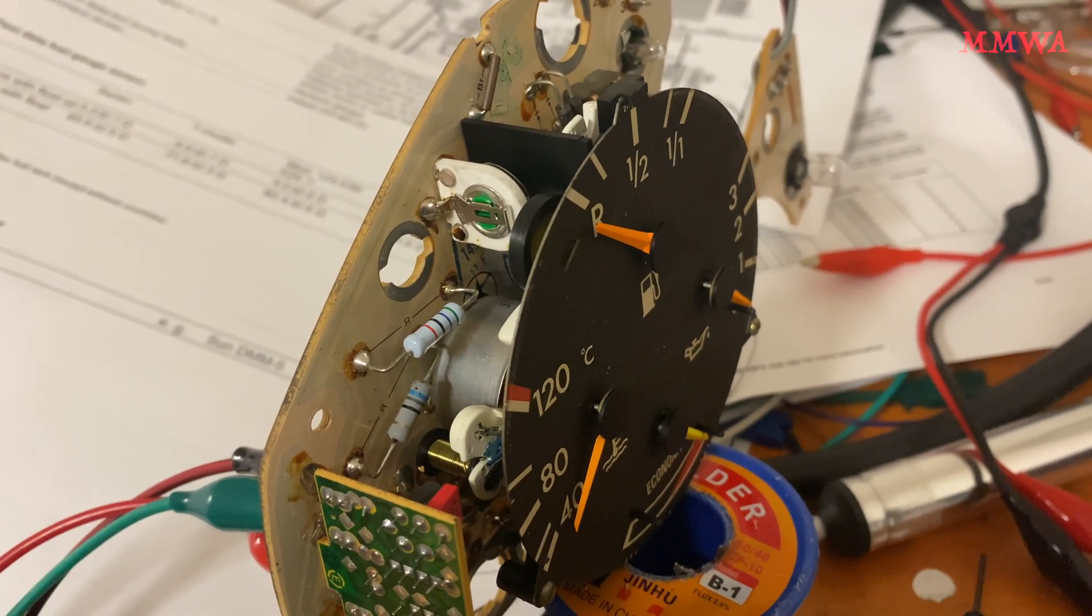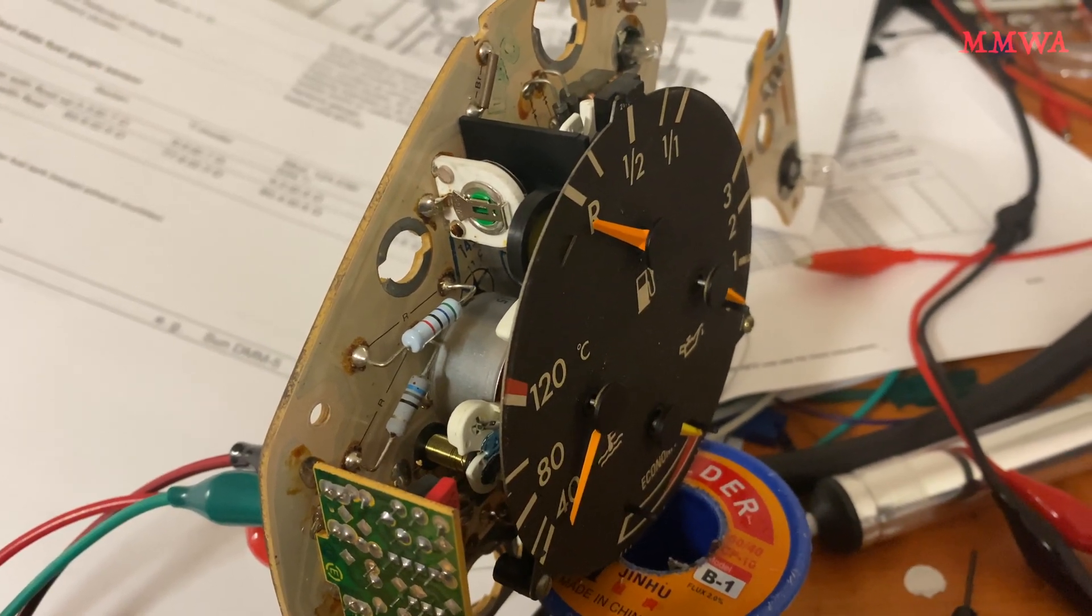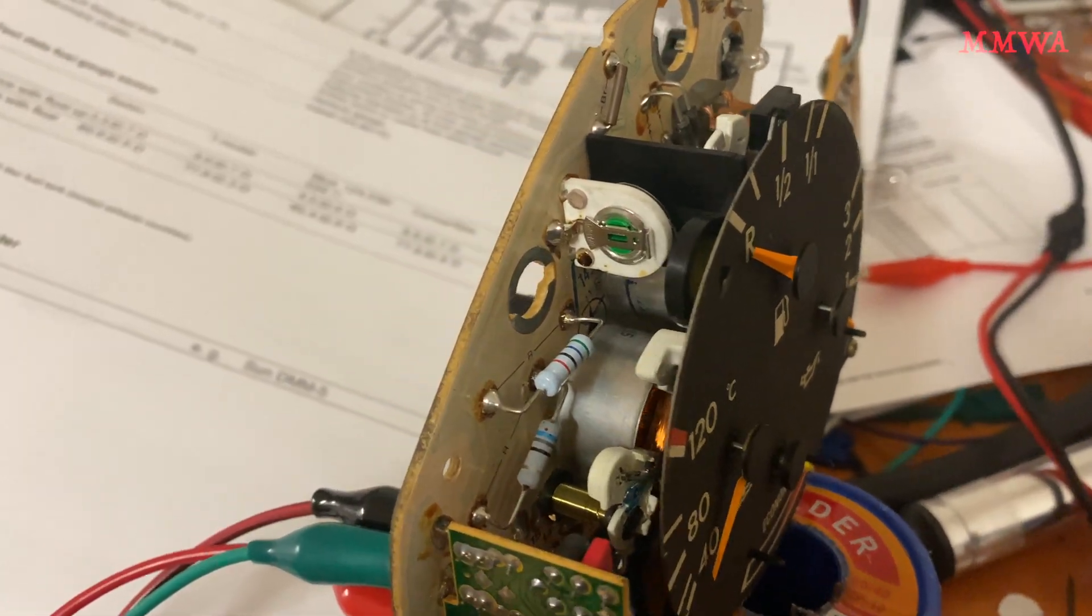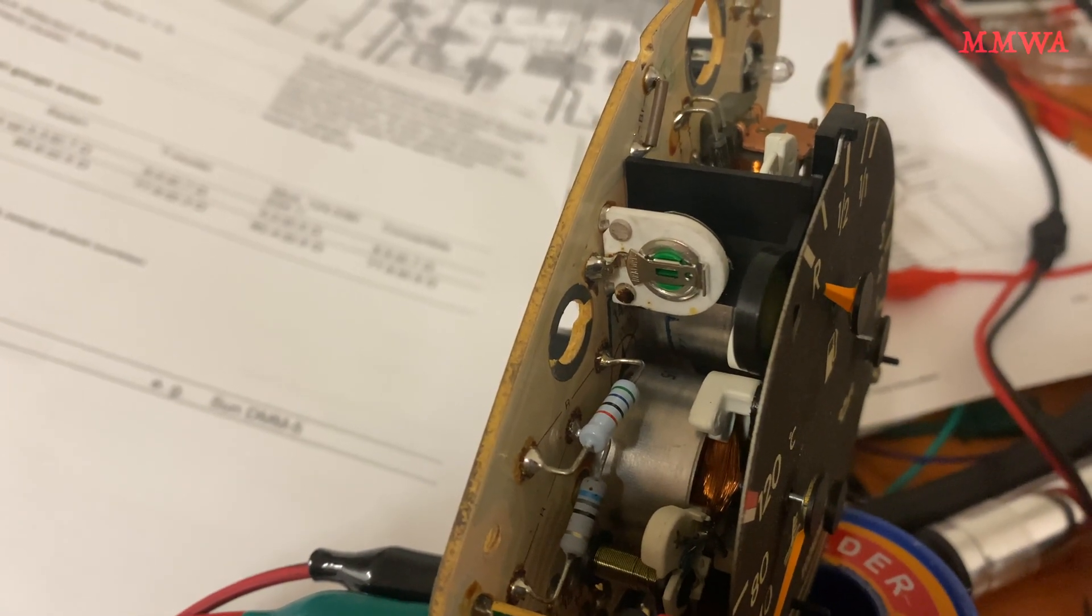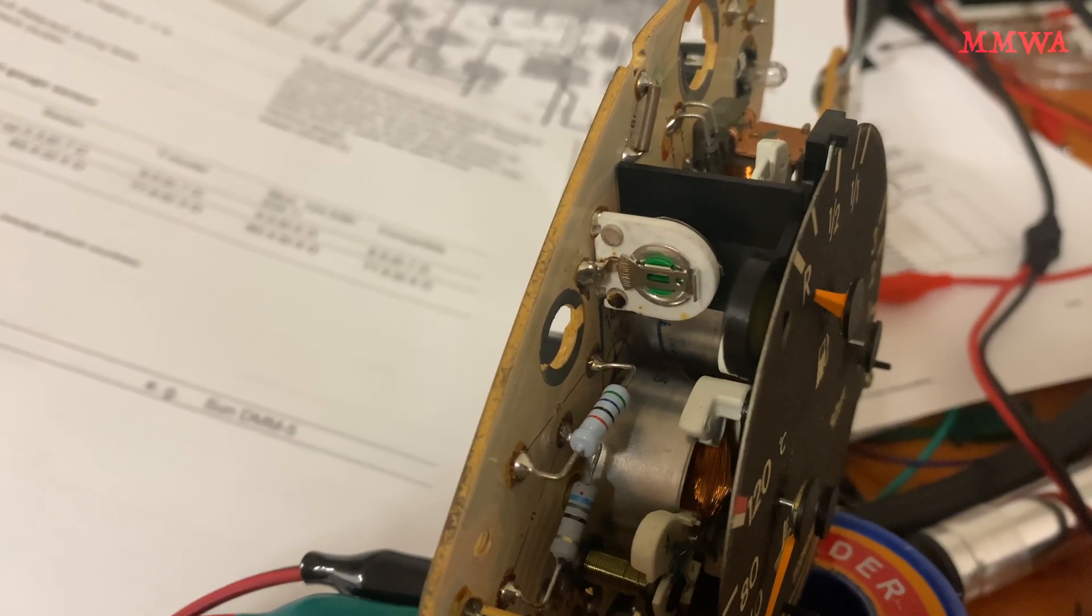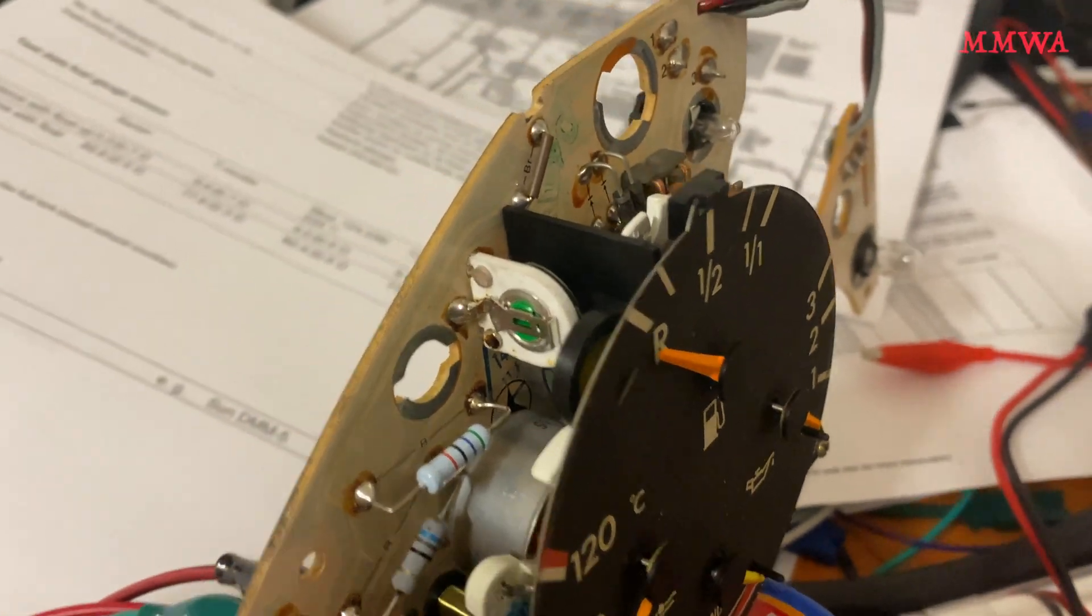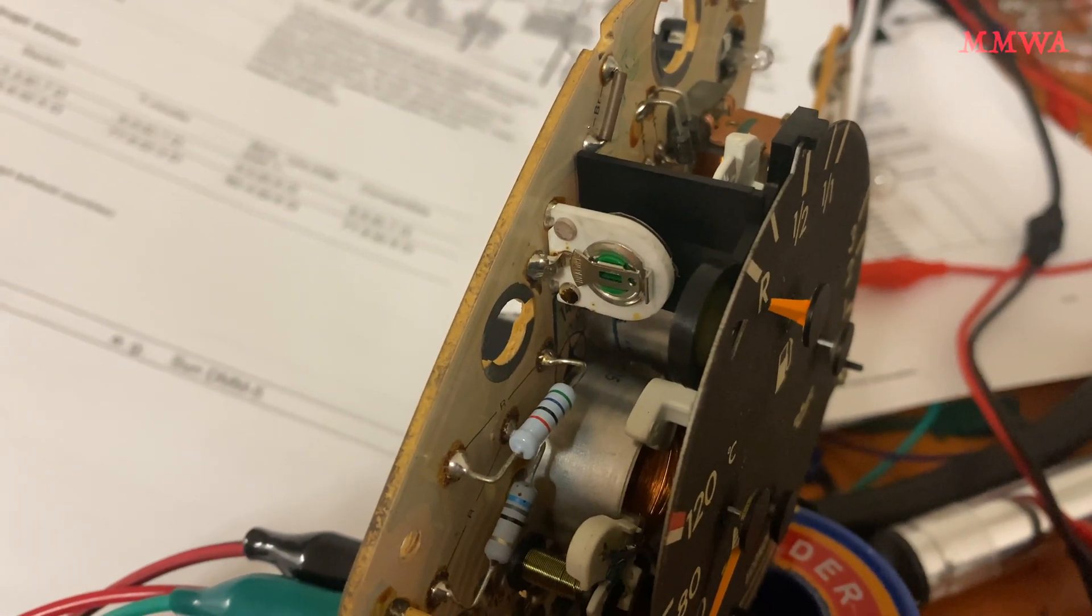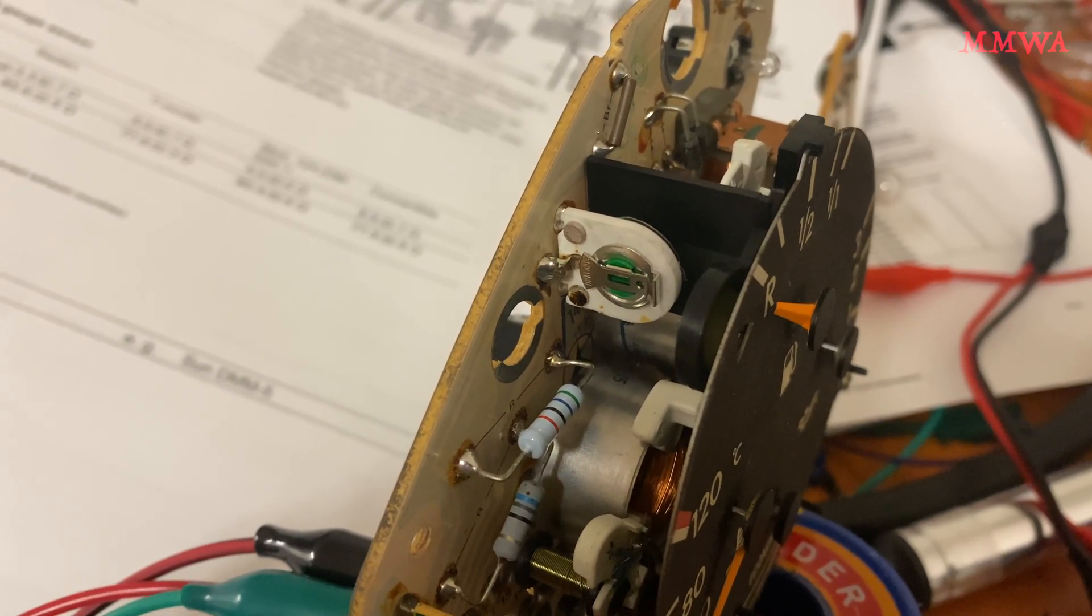For those of you that have played with 124 instrument clusters in the past, you may have noticed that there is indeed a calibration potentiometer hiding behind the fuel level gauge, and it is indeed for the fuel gauge itself. And you ask, why? Why does that need to be there? Well, it's not for you to play with.